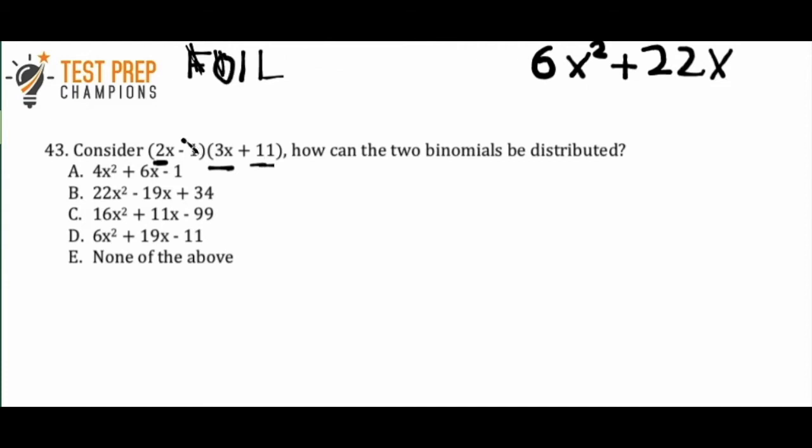Next we want to do the inner two terms. So we've got our negative 1. Very important to bring the negative along for the ride here. And 3x. So what is negative 1 times 3x? That is negative 3. Of course we have to keep the x along for the ride here too.